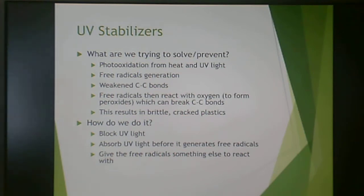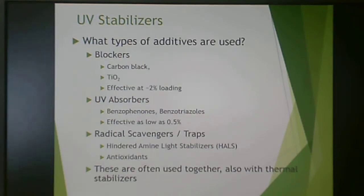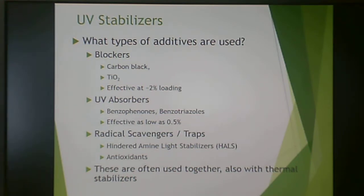We can stabilize things from UV in a couple of different ways: we can block the UV light, we can absorb the UV light before it generates free radicals, or we can give the free radicals something else to react with instead of the polymer backbone. Blockers are typically low-cost fillers effective at pretty low loading, so they won't compromise your mechanical properties. Carbon black is a good one, and so is titanium dioxide — just a little bit of those can effectively block UV. You also have UV absorbers such as benzophenones and benzotriazoles, which can be added in as low as 0.5%.